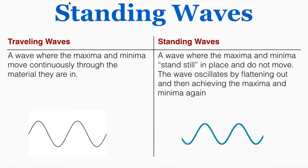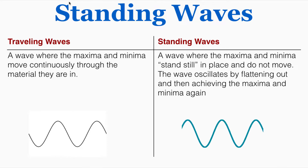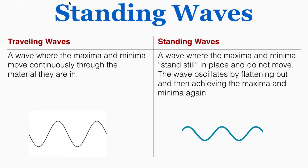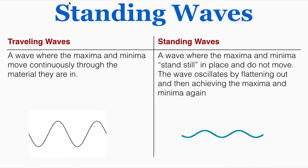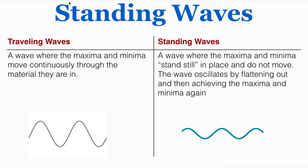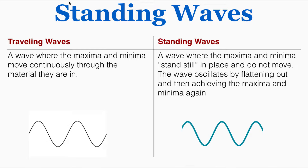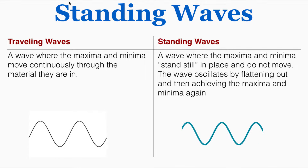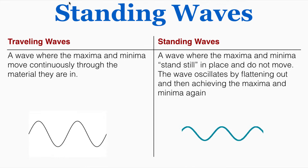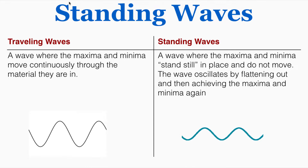The new pattern we're talking about in this video is a standing wave, where the maxima and minima stand still in place and do not move. The wave oscillates by flattening out and then achieves the maxima and minima again. You can see in the animation on the right an example of a standing wave. Its maxima and minima oscillate up and down, but certain points on the wave do not oscillate at all — they just stay in place.